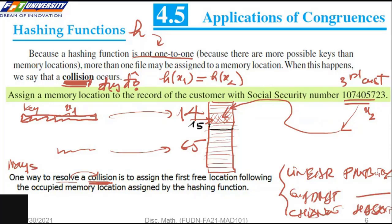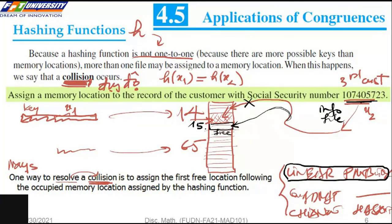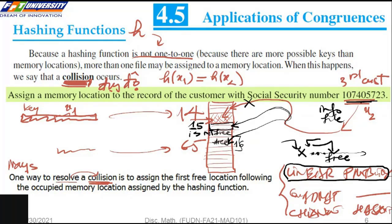Methods to resolve collisions include linear probing, quadratic probing, chaining, and caching. With linear probing, if the next memory location is free, we assign the customer's information there. If that slot is not free, we try the next one. We can discuss these methods further in the Data Structures course.